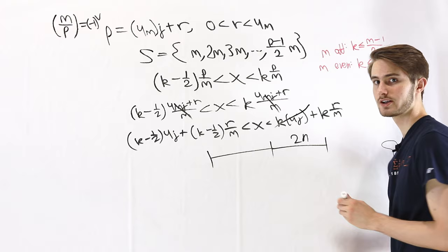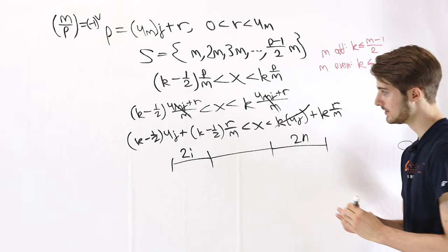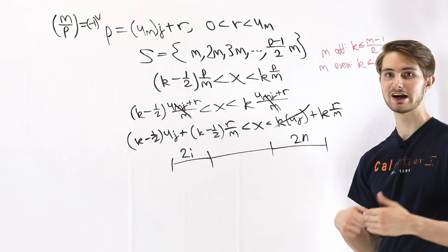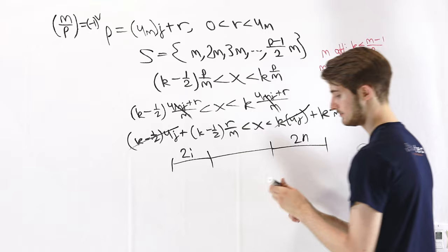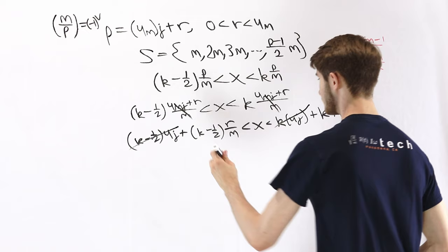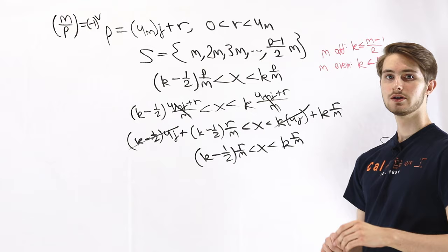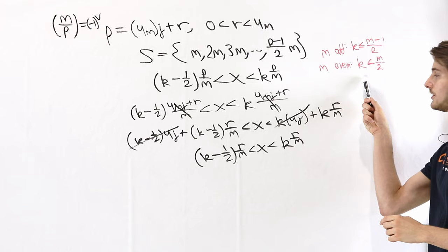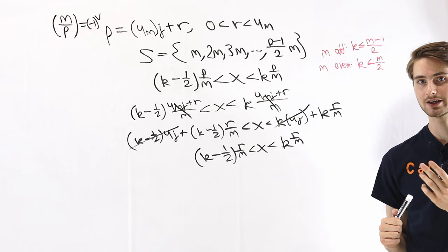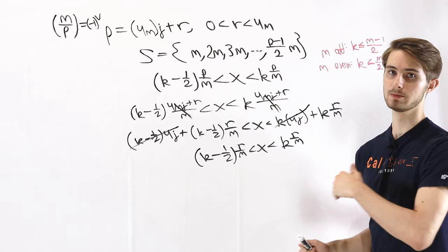In this final simplified form, there is nothing about p or j — only r/m appears, and the upper bound on k depends only on m. This tells us that the value of j doesn't affect whether m is a quadratic residue mod p. The only thing that matters is the remainder r when we divide p by 4m. This leads us to our first lemma.